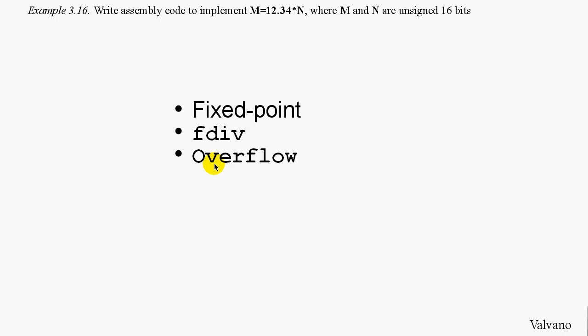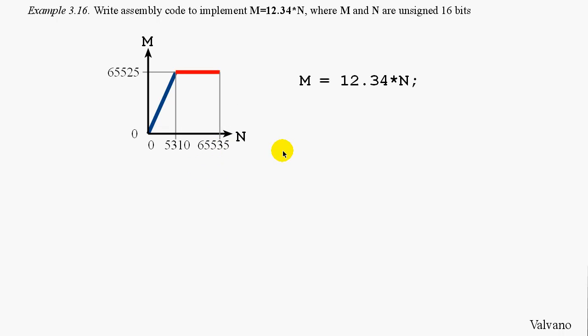Let's begin. In this example, we are asked to take one 16-bit value in N, multiply it times 12.34 and store the result in M.